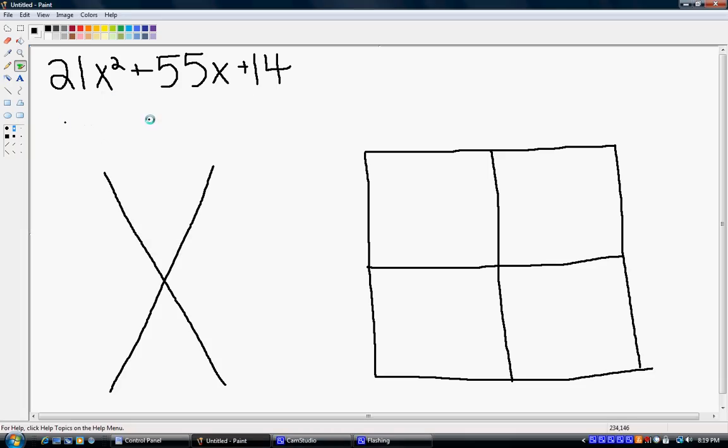Okay, so the problem we have is 21x squared plus 55x plus 14. So to begin, we multiply 21 by 14, and we'll put that right here, which is 294.